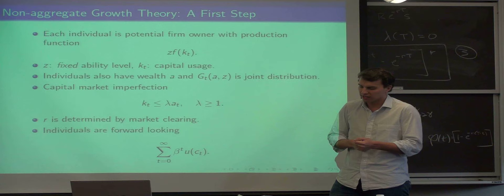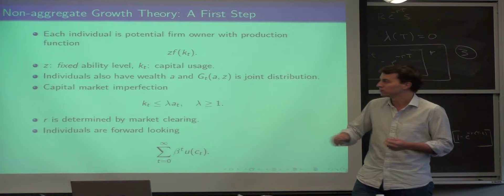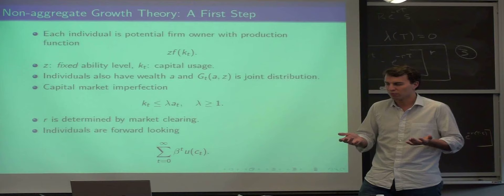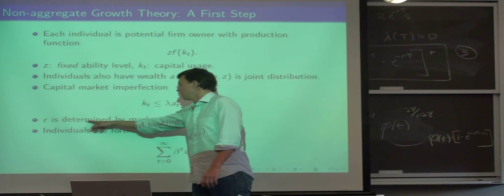We assume that there's some capital market imperfections. In particular, how much capital you can use depends on your wealth. The idea is that if you go to a bank and say, I've got this really good project, so I have a very high Z, I want to take out $1,000, the bank's going to say, wait a minute, how do I know you're going to repay me? You'll have to put up some collateral and the collateral is your wealth.